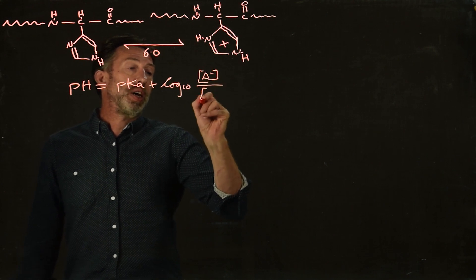So if we wanted to know what percentage of the side chains are protonated at any given pH, we need to invoke the Henderson-Hasselbalch equation. The Henderson-Hasselbalch equation says that pH is equal to the pKa plus the log 10 of A minus divided by HA.